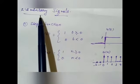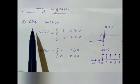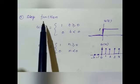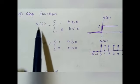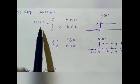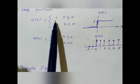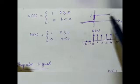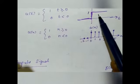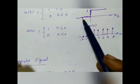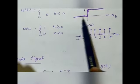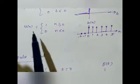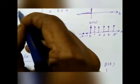Now we will see the basic elementary sequences. The first elementary signal used in many places in signal systems is the step function, denoted by u(t). It is equal to 1 for positive time and 0 for negative time — that is, for t greater than 0 the value is 1, and for t less than 0 the value is 0. It looks like a step. This is valid for continuous time signal.